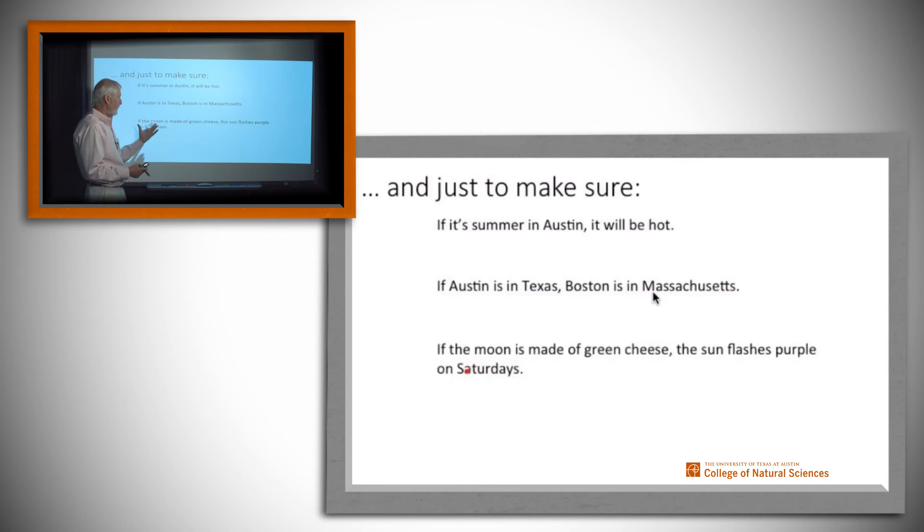What about this one here? If the moon is made of green cheese, the sun flashes purple on Saturdays. Well, the moon is not made of green cheese, so the antecedent right here is false. As we saw from the truth table, that means that the implication is true no matter what the truth value of the consequent is. So if the moon is made of green cheese, the sun flashes purple on Saturdays is a true statement. However, also a true statement would be if the moon is made of green cheese, the sun does not flash purple on Saturdays. Both of those are true simply because if the antecedent is false, the implication is always true.